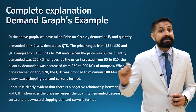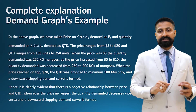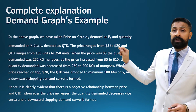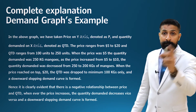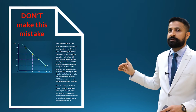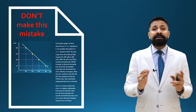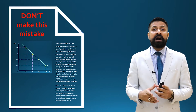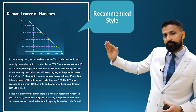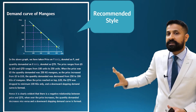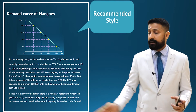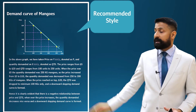Justification paragraph: 'Hence, it is clearly evident that there is a negative relationship between price and quantity demanded. Whenever the price increases, the quantity demanded decreases, and vice versa, ceteris paribus, and a downward sloping curve is formed.' A common mistake students make is drawing the graph in a corner and writing the explanation right beside it — that is wrong. Approximately a quarter of your paper should be used only for the graph, with the explanation below it. Two paragraphs are more than enough — do not write a third.